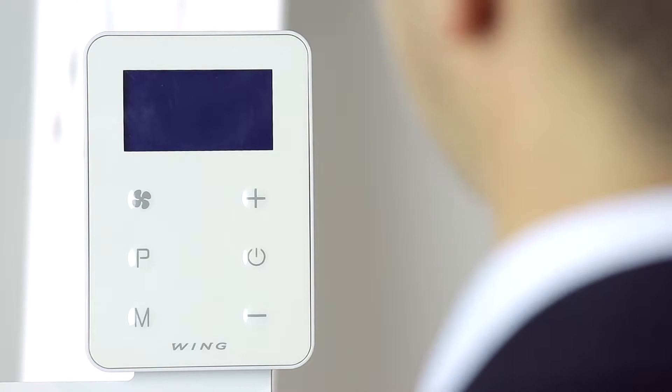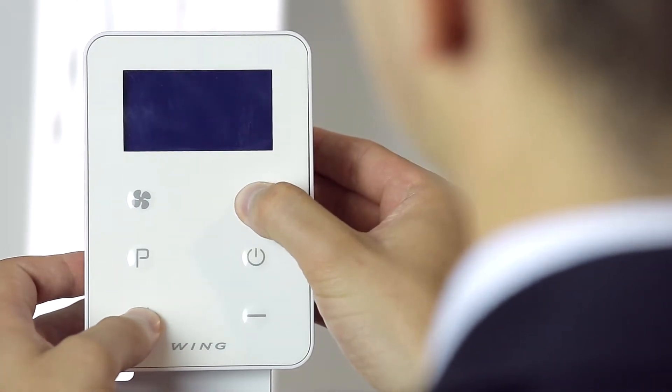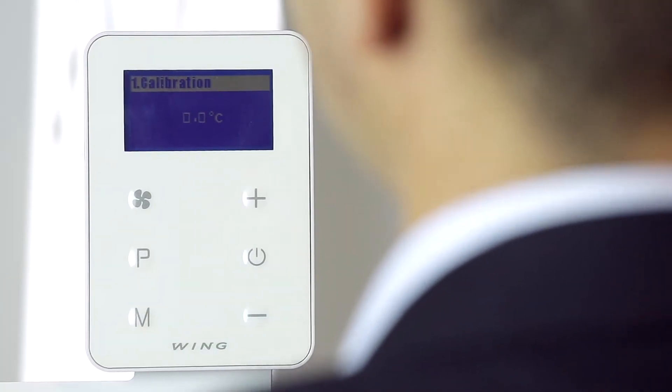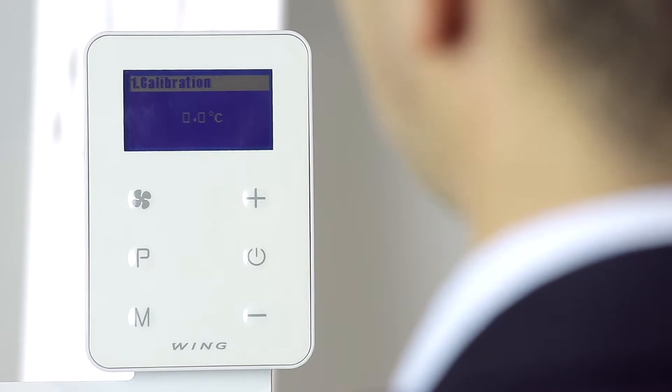By pressing and holding the M button and the plus button simultaneously, we can go into advanced settings. Now we can see displayed on the screen calibration of the temperature sensor.